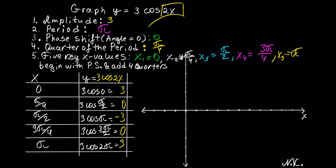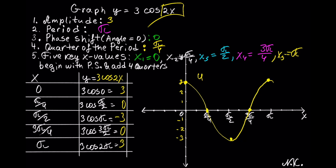Once we have the table, we can sketch the graph. The x-values 0, π/4, π/2, 3π/4, and π should be spaced evenly. The cycle ends at π. The graph goes up to 3 and down to −3. At x=0, cosine equals 3; it goes to 0 at π/4; down to −3 at π/2; back to 0 at 3π/4; and the cycle ends at 3 when x equals π. Once the 5 points are plotted, connect them with smooth curves. This is our y equals 3 cosine of 2x graph. That's all!